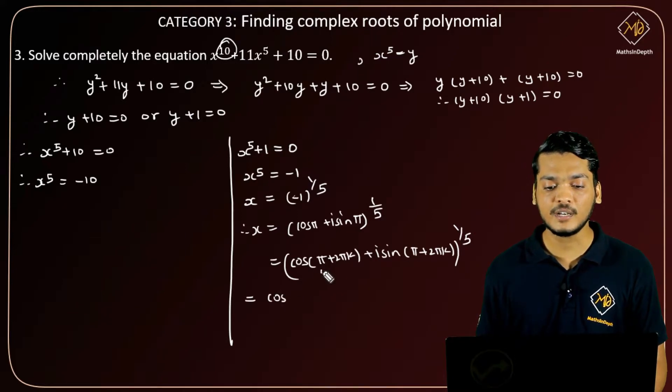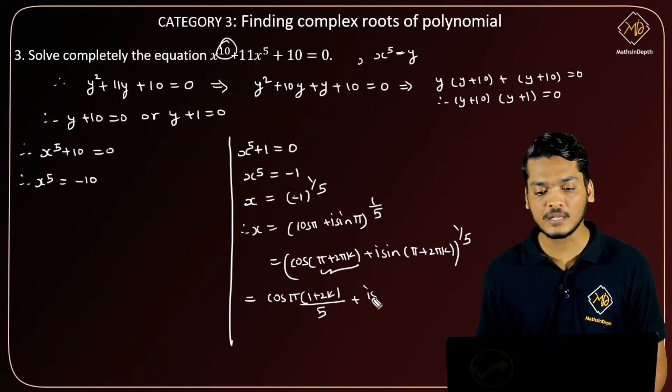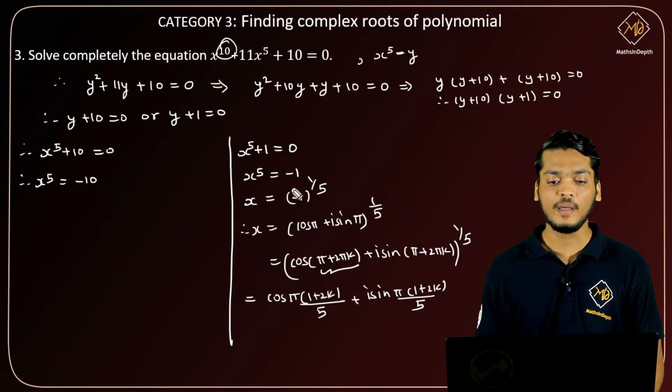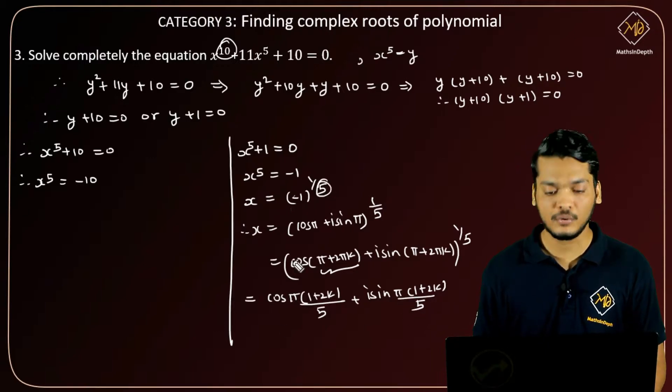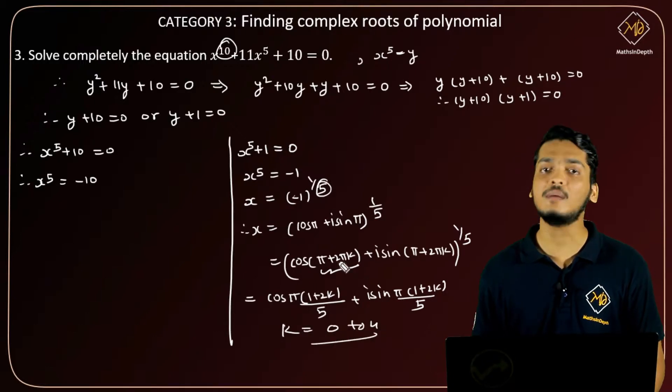Now by De Moivre's theorem, this can be written as cos(π(1+2k)/5) + i sin(π(1+2k)/5). So here for roots, k will go